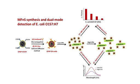It is for this reason that the pairing of magnetic and fluorescent modalities is important. The combination has allowed for the detection of as little as one colony-forming unit of E. coli O157:H7 within minutes.